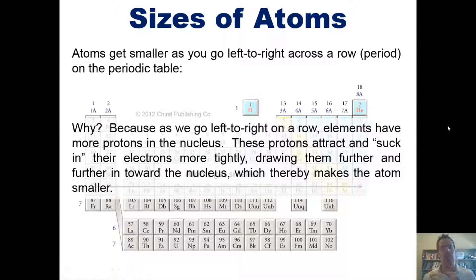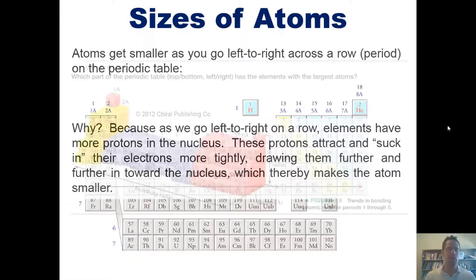So why is that? The reason is because as I go left to right across a row on the periodic table, elements also have more protons in the nucleus. Furthermore, elements don't get more orbitals going across a row as they do when you go down a column. They do get another electron as I go from one box to the next, but one electron doesn't actually increase the size of the element—having more orbitals does. But each element has one more proton than the element that preceded it, and that proton in the nucleus attracts and sucks in the electrons more tightly, which draws them further in toward the nucleus and thereby makes the atom smaller.